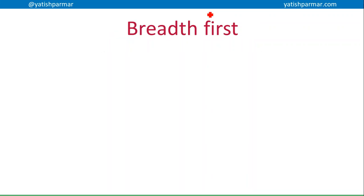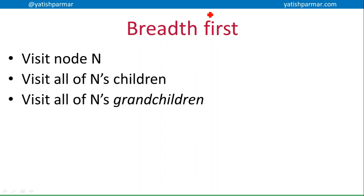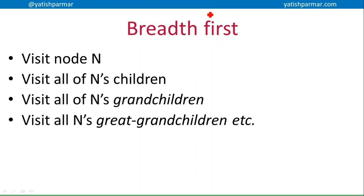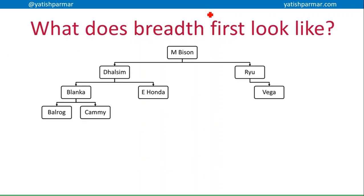The first one is breadth-first traversal. Breadth-first traversal is to do with the layers of the tree. We're going to visit node N, then all of node N's children, then all of node N's grandchildren, then all of node N's great-grandchildren, and so on. When we do breadth-first traversal, we make use of a queue. We'll be seeing the actual use of a queue in the next video when we talk about the implementation, and you'll see how it makes it really easy to do this.